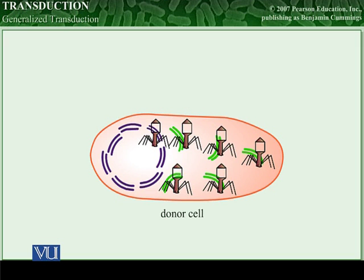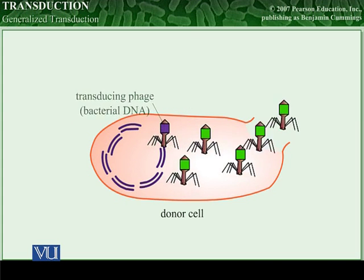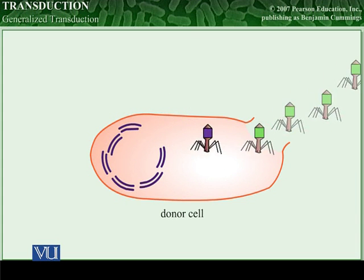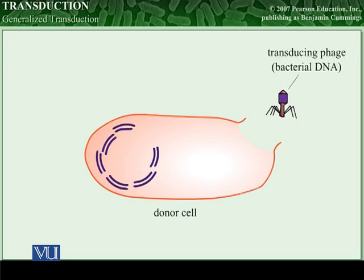Normally, phage DNA is coated with phage protein to form new virus particles, but sometimes pieces of bacterial DNA are mistakenly packaged in phage proteins. These sloppily packaged phage particles carry bacterial DNA rather than phage DNA and are called transducing phages.